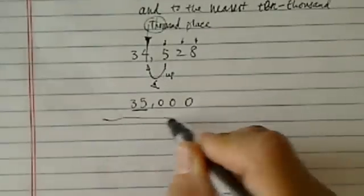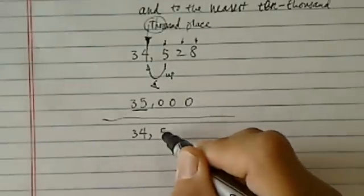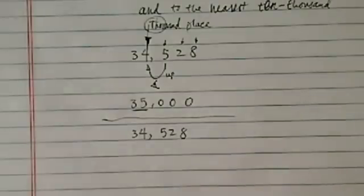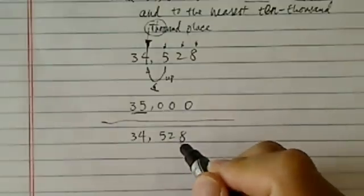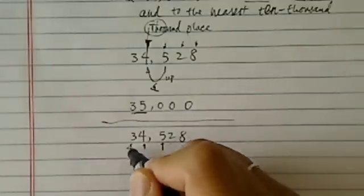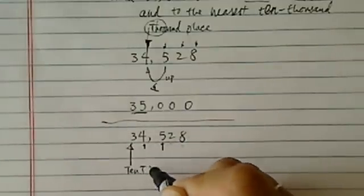Now part two, we're asked to round the same number, this time, to the nearest ten thousand. All right, so let's take a look. One, two, this is the hundreds, thousands, this is the ten thousand.